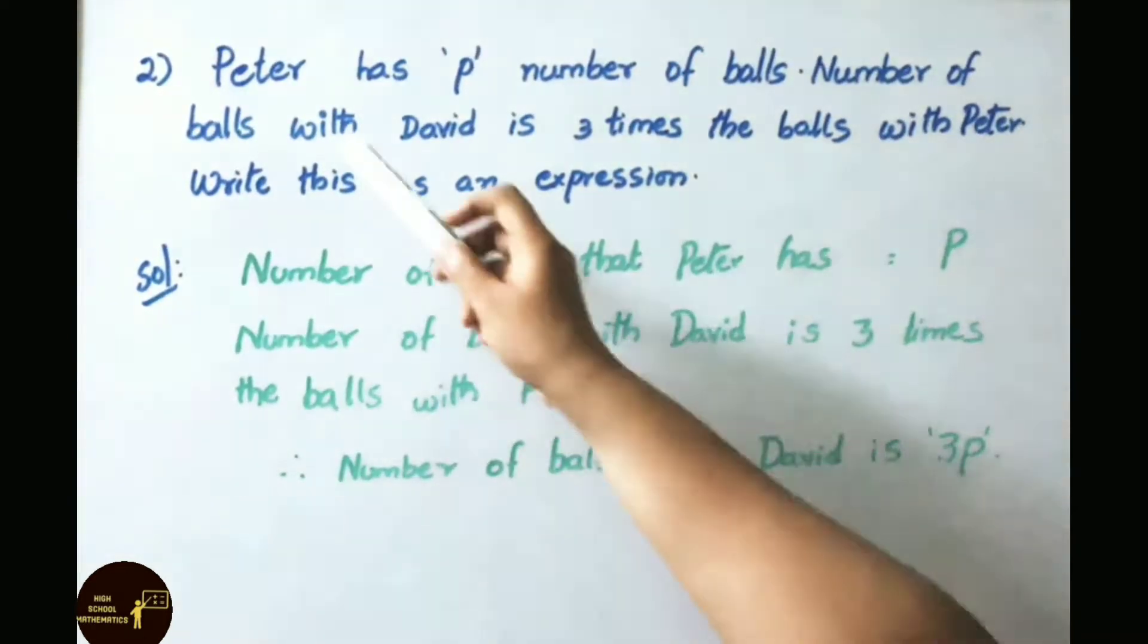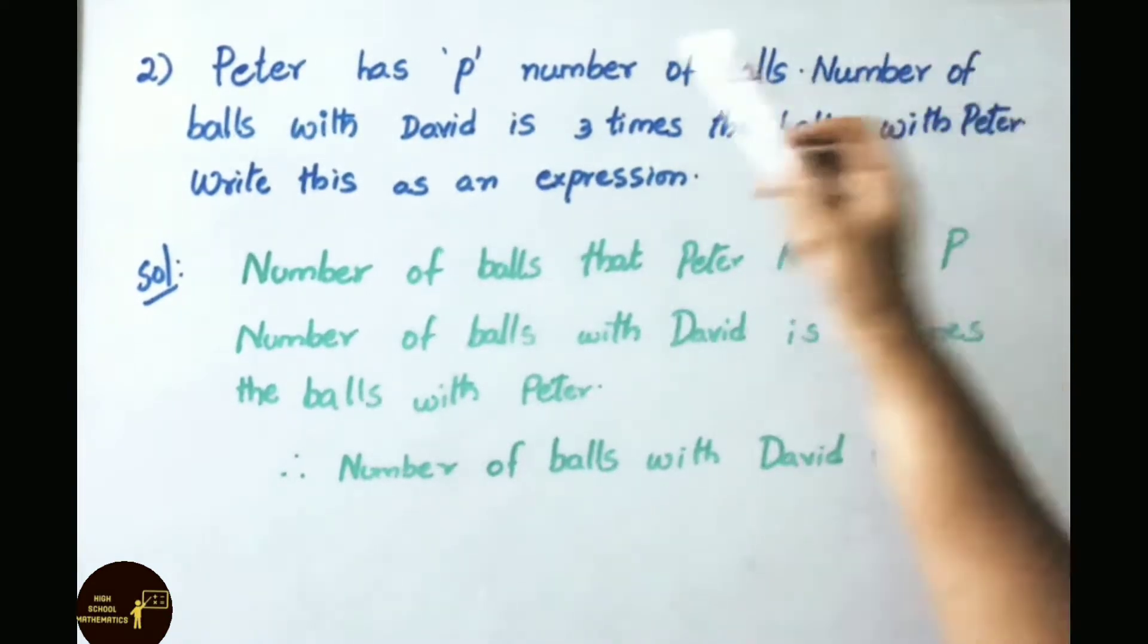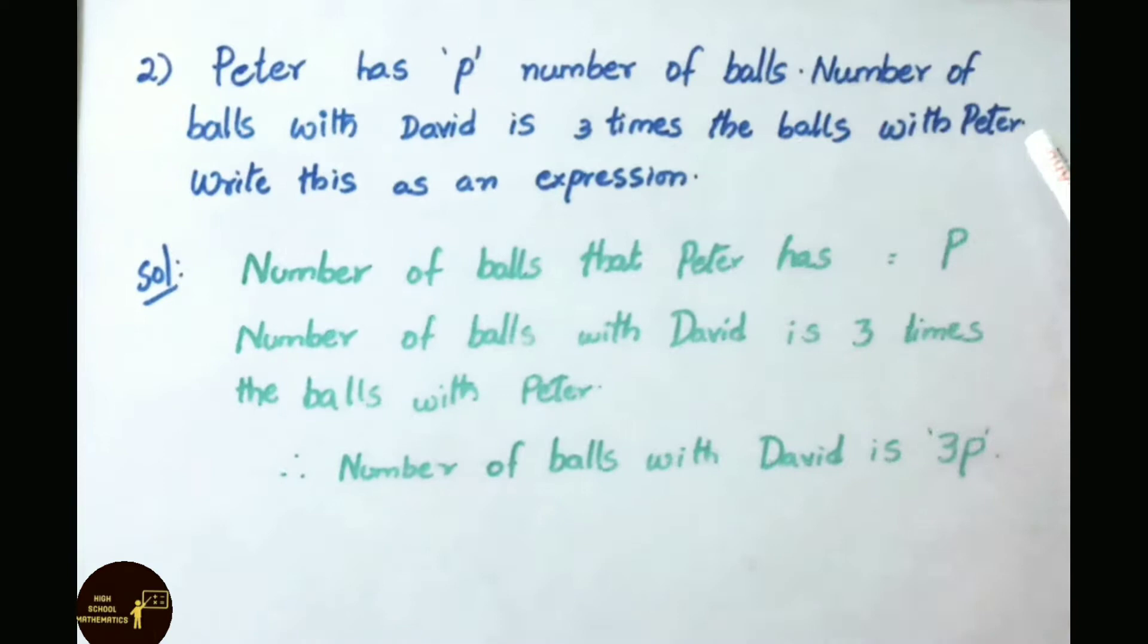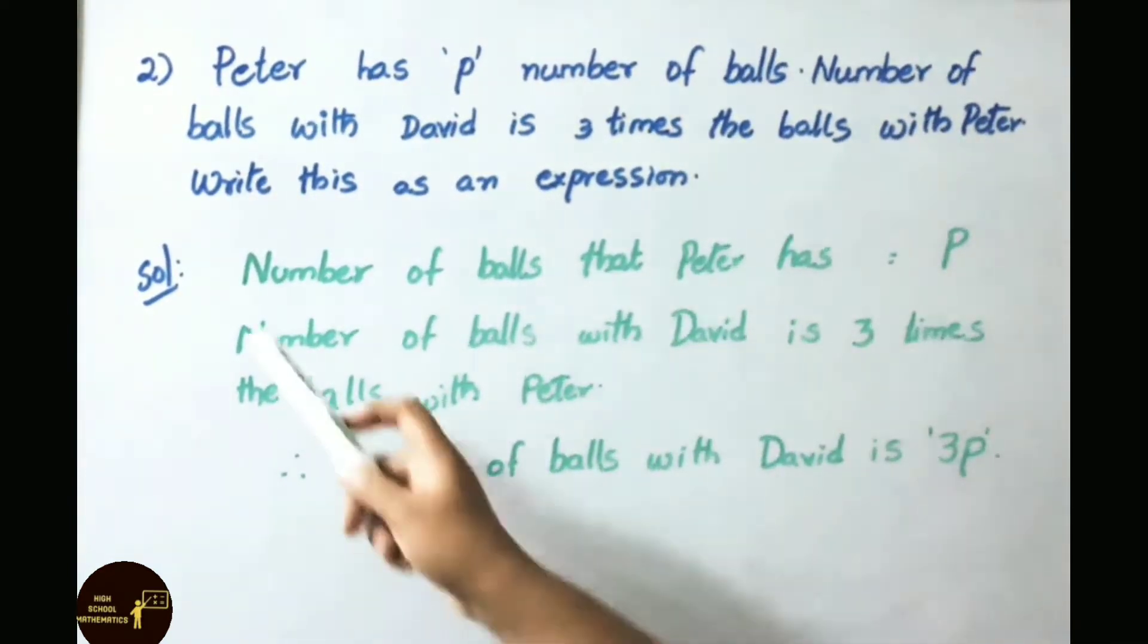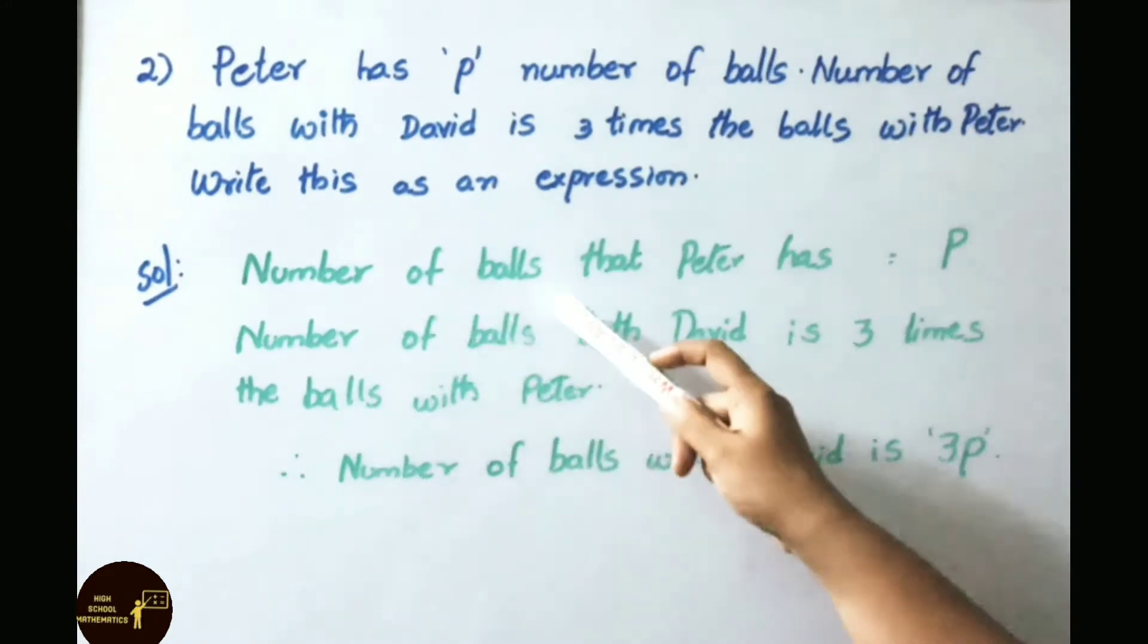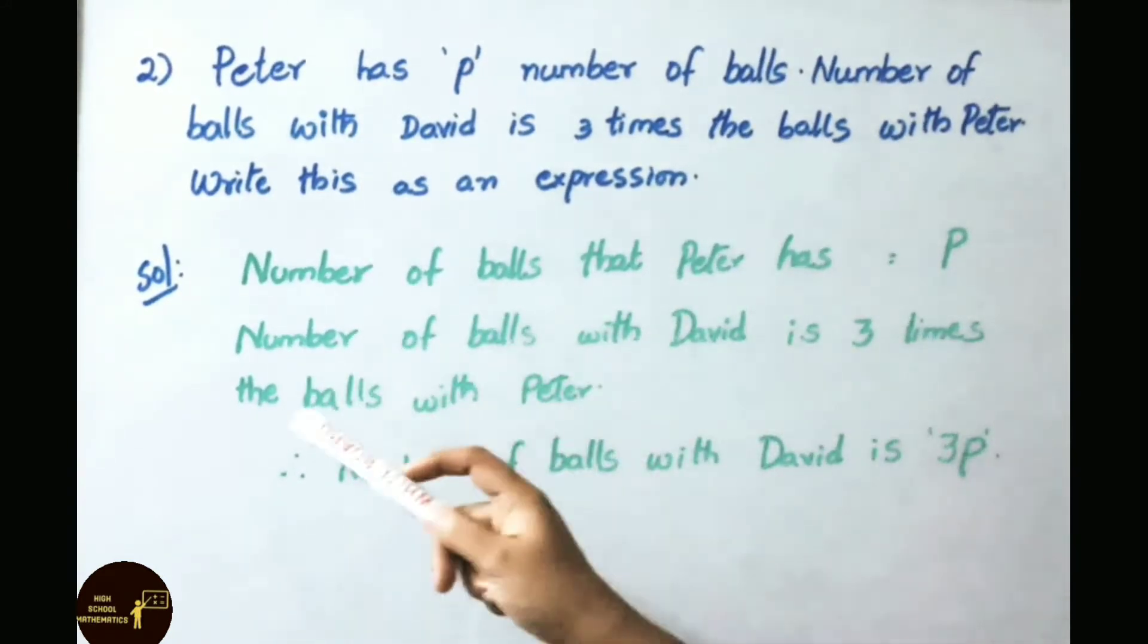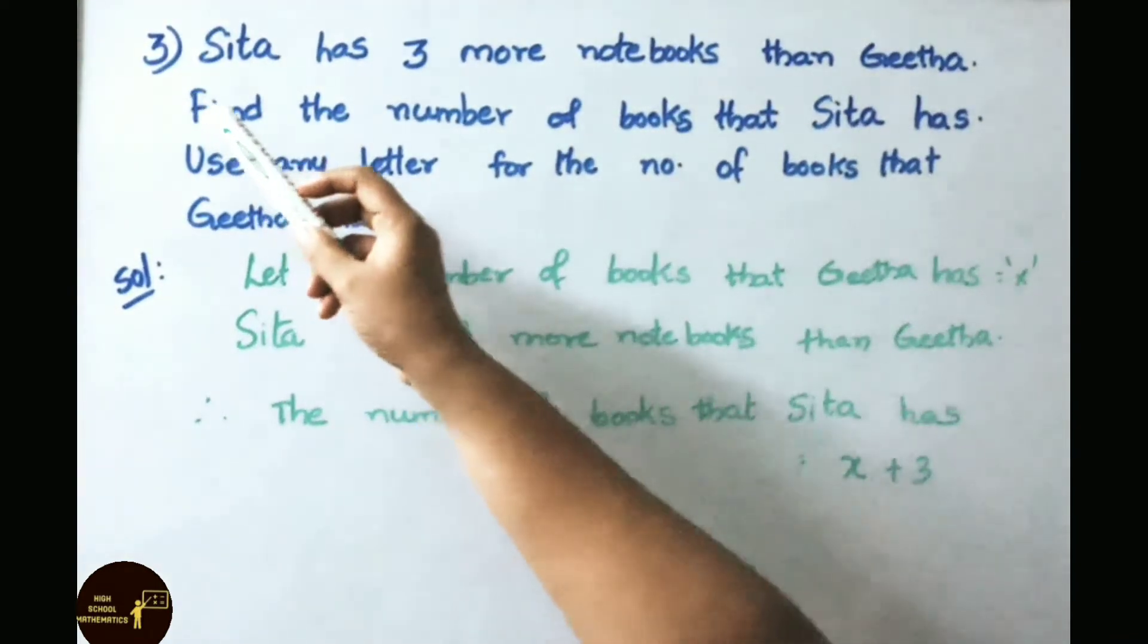See now question number 2. Peter has P number of balls. Number of balls with David is 3 times the balls with Peter. Write this as an expression. Let us see the solution. Number of balls that Peter has equals P. Number of balls with David is 3 times the balls with Peter. Therefore, number of balls with David is 3P.